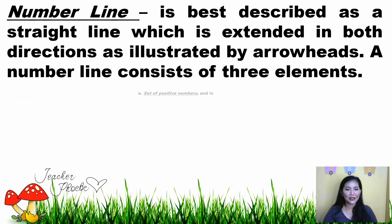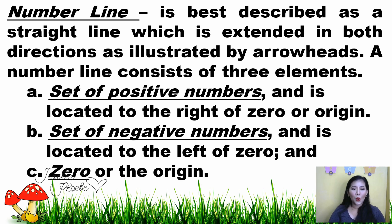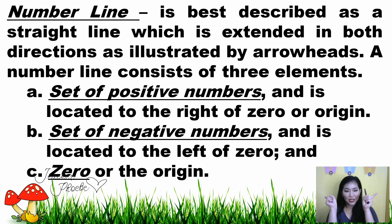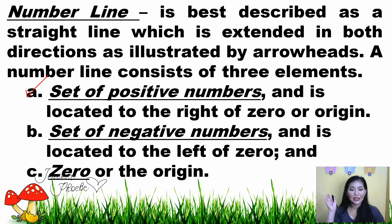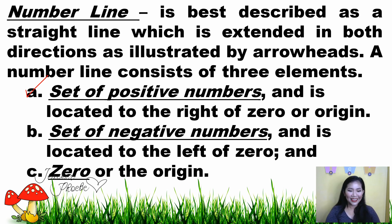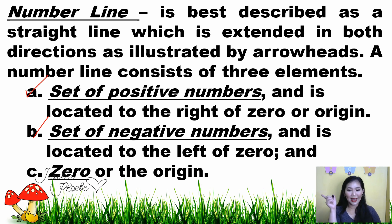Let us recall: what is a number line? A number line is best described as a straight line extended in both directions, as illustrated by the arrow heads. A number line consists of three elements: the set of positive numbers, located to the right of zero; the set of negative numbers, located to the left of zero; and zero, or the origin.